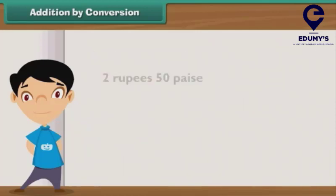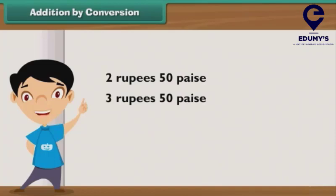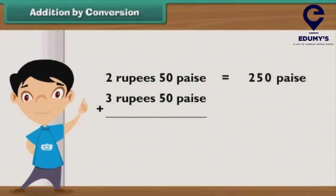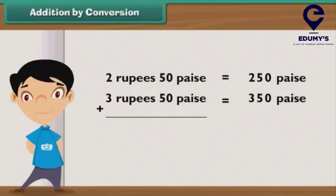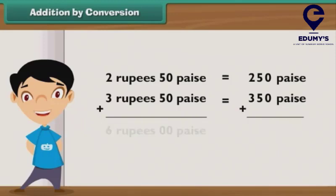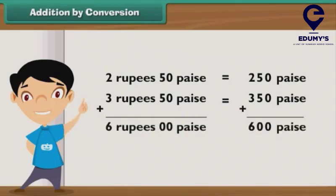Let us add 2 rupees 50 paisae and 3 rupees 50 paisae. 2 rupees 50 paisae is equal to 250 paisae. 3 rupees 50 paisae is equal to 350 paisae. So, we add 250 paisae and 350 paisae.